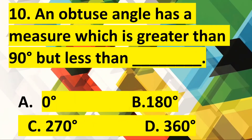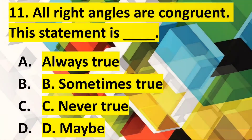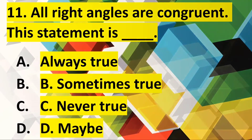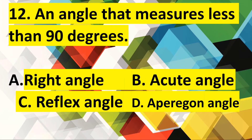Number nine: An obtuse angle has a measure which is greater than 90 degrees but less than how many degrees? Number 11: All right angles are congruent — this statement is true or false. Number 12: An angle that measures less than 90 degrees.